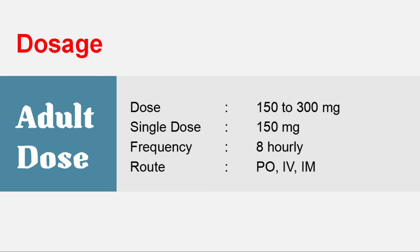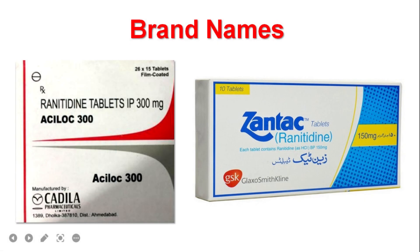Dosage: Adult dose is 150–300 mg as a single dose, or 150 mg frequency every 8 hours. Routes of administration include oral, intravenous, and intramuscular. Brand names include Zantac and Asaloc.